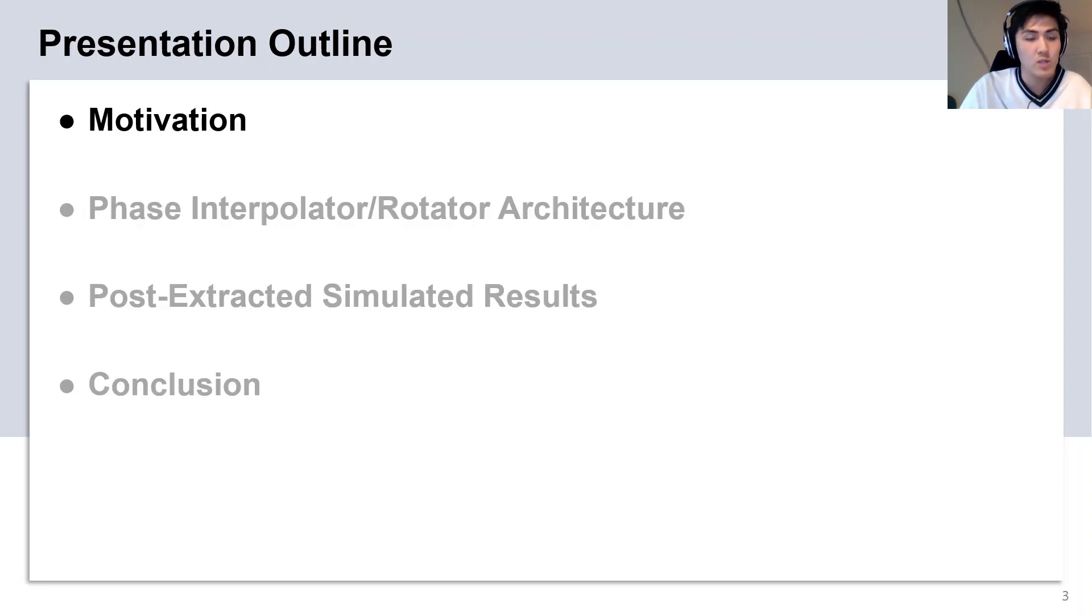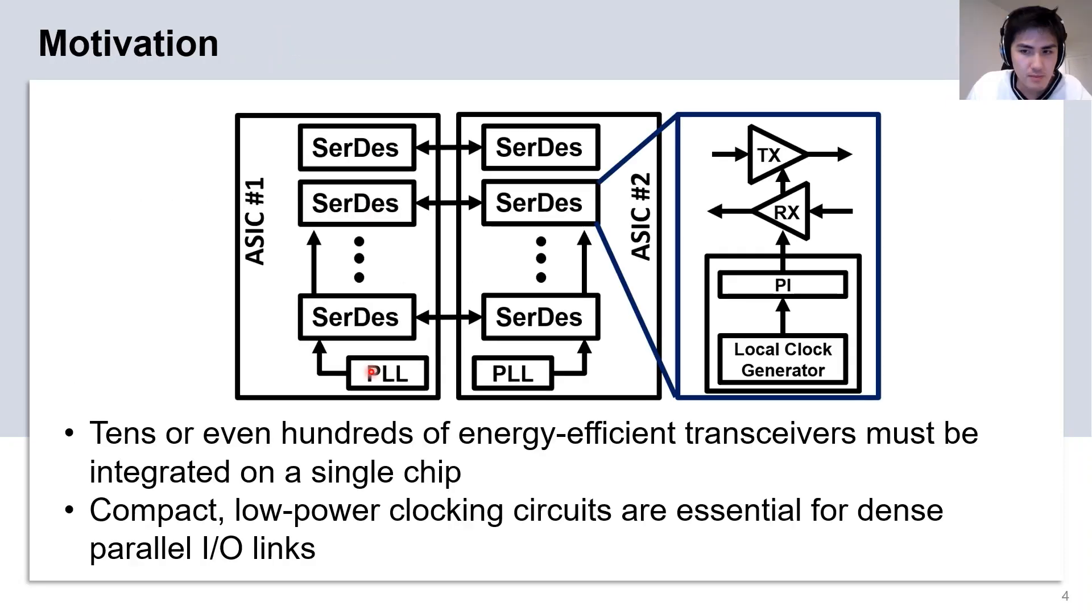Let's begin with the motivation behind this work. Tens to hundreds of transceivers are densely packed into a single chip to support the aggregate bandwidth demands of nanoscale CMOS A6. Clocking circuits are vital in both the transmitter and receiver side of the system to synchronize these parallel transceivers and as a result can be a dominant contributor to their overall power and area consumption.